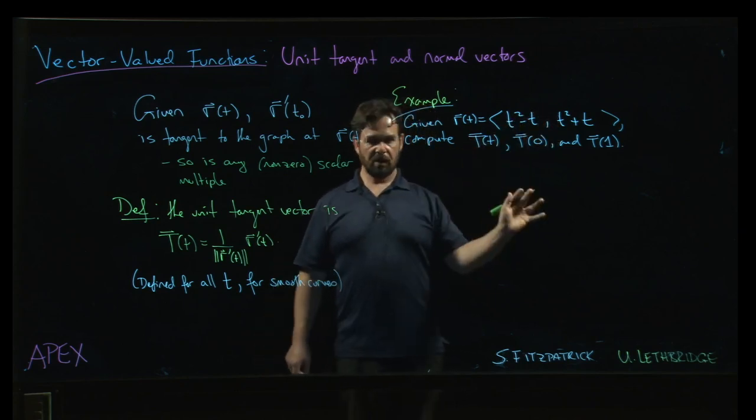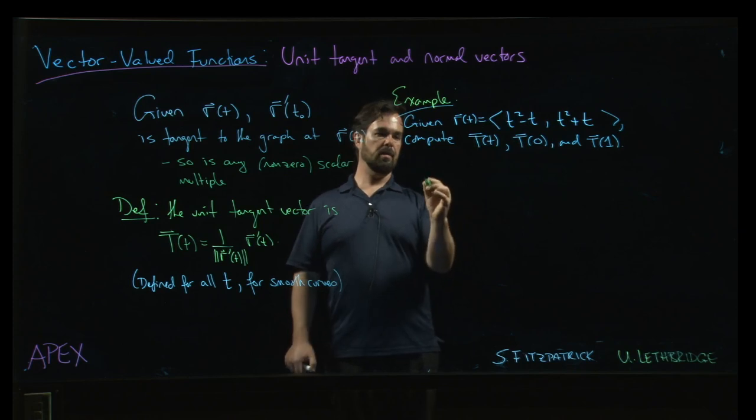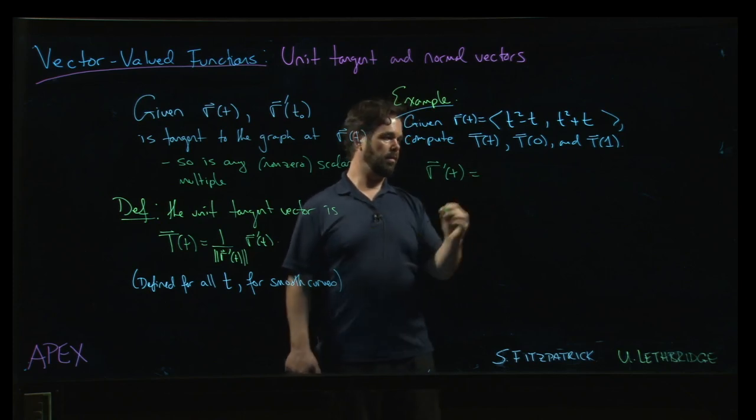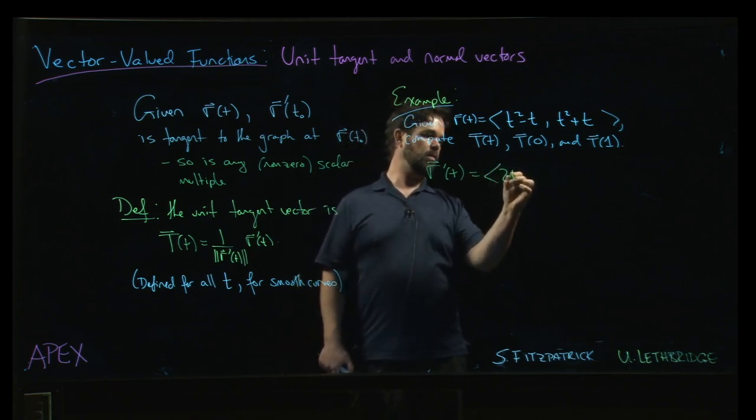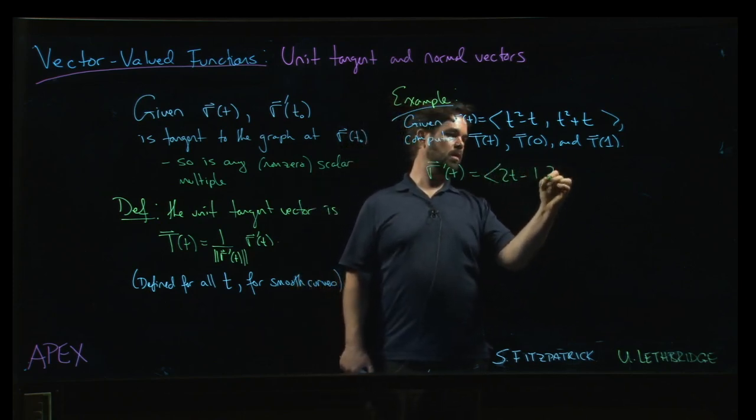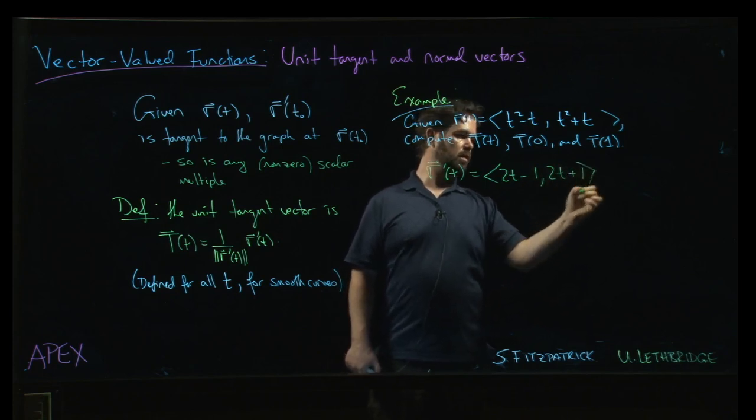But the process, exactly the same. First step, calculate r prime. So we get 2t minus 1, 2t plus 1. Then,